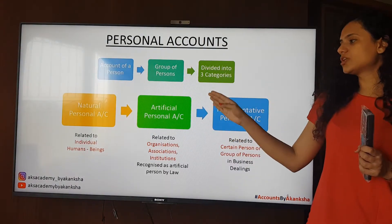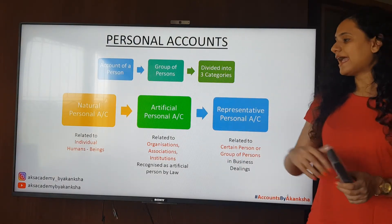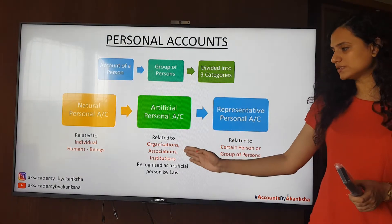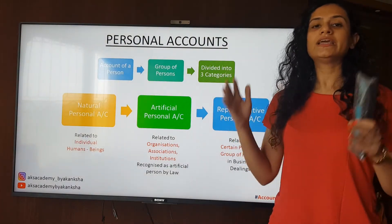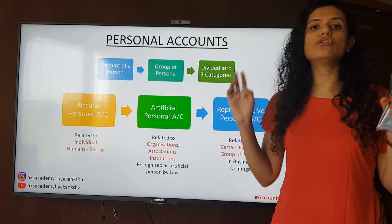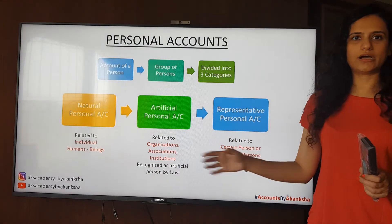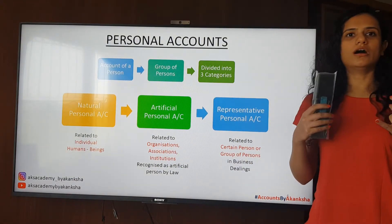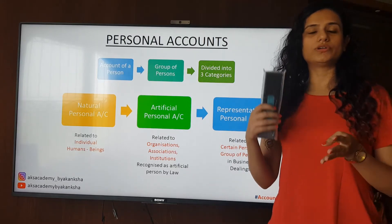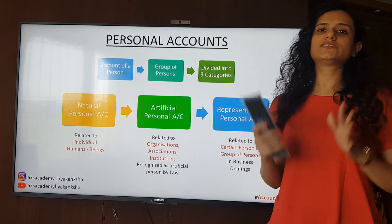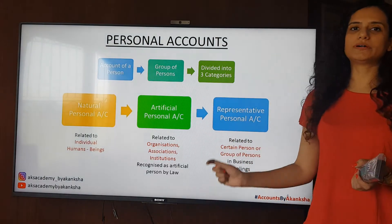Then we have the artificial personal account. When we talk about artificial personal accounts, we are referring to any organization, associations, or institutions — any institution or company which is a legal entity or a lawful entity. An organization is going to be an artificial personal account. For example, Arya Vidya Mandir school account, Jamnabai account, or HDFC bank account. When you take the name of any organization or institution, that becomes an artificial personal account.